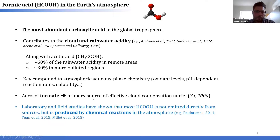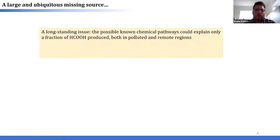What we know so far about formic acid from many laboratory and field studies is that it is actually very little emitted directly into the atmosphere — it is rather produced by a suite of chemical reactions involving a lot of precursors. However, there is a long-standing issue: despite all our knowledge in atmospheric chemistry, when we put together all the known sources of formic acid, we can explain only a fraction of what is observed in the atmosphere.